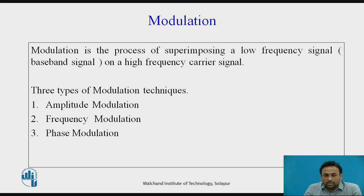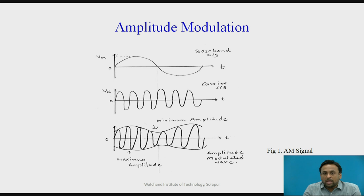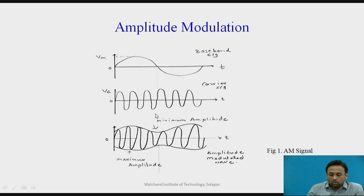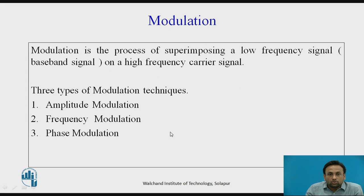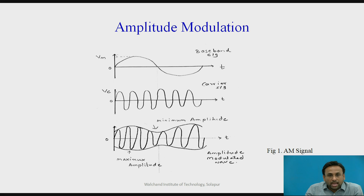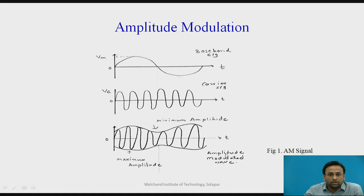There are three types of modulation techniques: amplitude modulation, frequency modulation, and phase modulation. In amplitude modulation, as seen in this figure, the modulating signal is superimposed on the carrier. In amplitude modulation, we change the amplitude of the carrier signal with respect to the instantaneous value of the modulating signal, and we get an amplitude modulated wave as output.